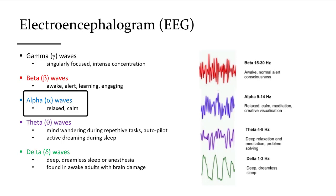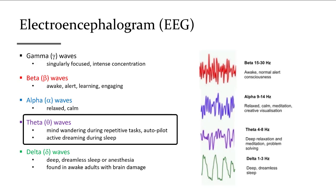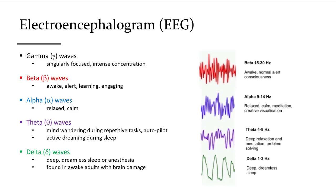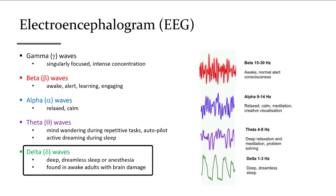Alpha waves dominate in a person who is relaxed and calm, taking a break to unwind, with the mind wandering. Individuals experiencing repetitive tasks — such as long highway driving or distance running — enter an autopilot state indicated by theta waves, which are slower than alpha waves. During the theta-dominated state, creative ideas and problem-solving thoughts are generated. Deep dreamless sleep or a person under anesthesia is dominated by the slowest frequency, known as delta waves.